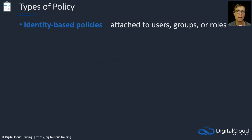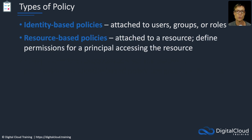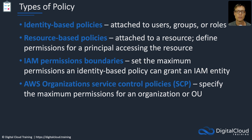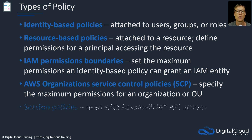Now let's look at the several types of policy. We're familiar already with quite a few of these: identity-based policies that we attach to users, groups, or roles; resource-based policies that we can attach to things like DynamoDB tables, S3 buckets, VPC endpoints; and then IAM permissions boundaries, which we've also been over. Then there's AWS Organizations service control policies, which we haven't covered yet — we'll cover these in detail later in the course. For now, just understand that AWS Organizations is a way to centrally manage multiple AWS accounts and apply policies that determine the maximum available permissions — those are called service control policies, or SCPs. Lastly, we have session policies, which are used with the AssumeRole API actions.